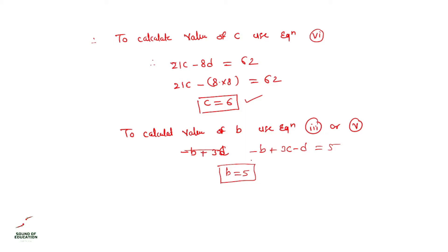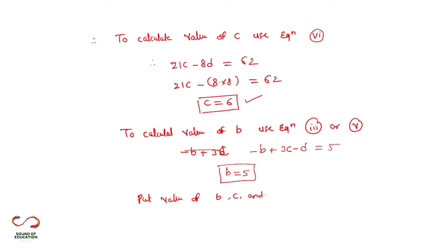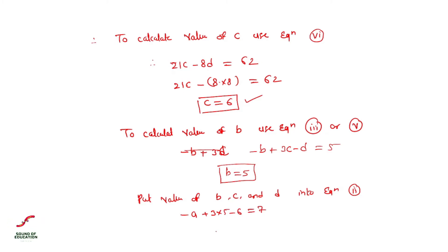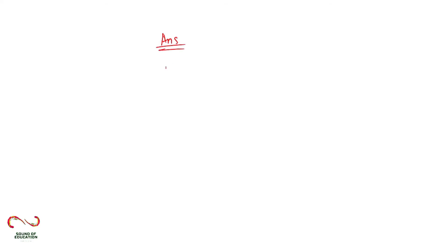Now with B, C, and D known, put their values into equation two to get A. Equation two gives: minus A plus 3 multiplied by 5 minus 6 equals 7, which gives A equals 2. So the final answers are: A equals 2, B equals 5, C equals 6, and D equals 8.